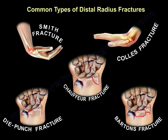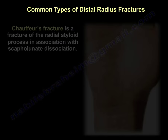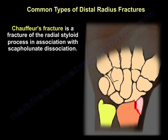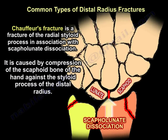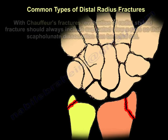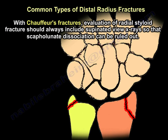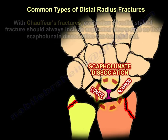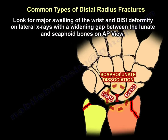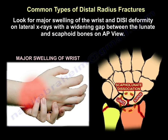The last type is the Chauffeur fracture — a fracture of the radial styloid process with scapholunate dissociation. It is usually caused by compression of the scaphoid against the styloid process, shearing it off, and producing scapholunate dissociation. Evaluation of the radial styloid fracture should always include a supinated view of the wrist so that scapholunate dissociation can be ruled out. Look for major swelling of the wrist and DISI deformity on the lateral x-ray, with widening of the gap between the lunate and scaphoid on the AP view.